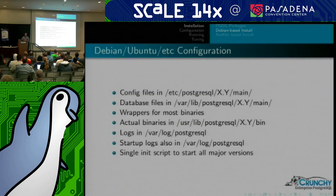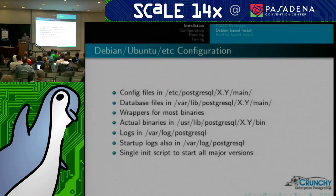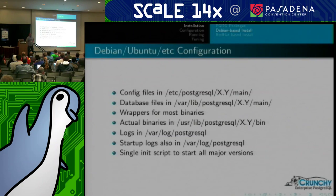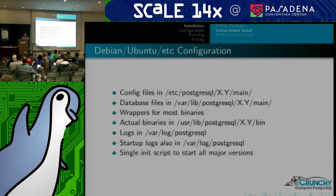In terms of configuration layout, all config files for a given instance live inside an x.y directory — that's a major version in Postgres land. So 9.3, 9.4, and 9.5 are all major versions. Inside that directory under /etc/postgres, because Debian allows multiple instances installed as well, there's an instance name — in this case, 'main', which is the default. So when you do apt-get install, you'll get an instance of whatever version — 9.4 in my example — named main. All data files end up in /var/lib/postgres then that major version then the instance name.